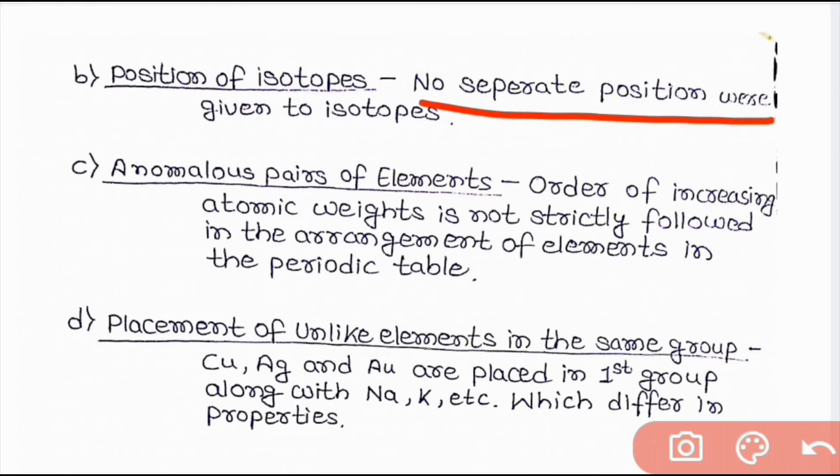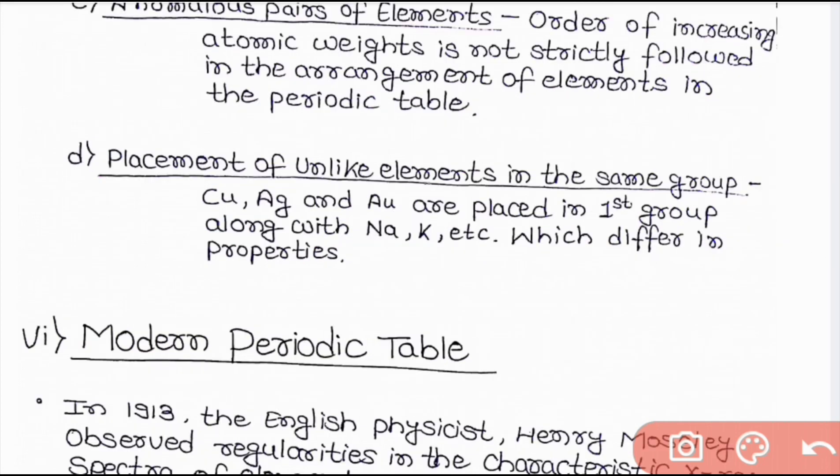The third limitation is analogous pairs of elements. Order of increasing atomic weight is not strictly followed in Mendeleev periodic table. And the fourth limitation is placement of unlike elements in the same group. Copper, silver and gold are placed in first group along with sodium, potassium etc which differs in the property.